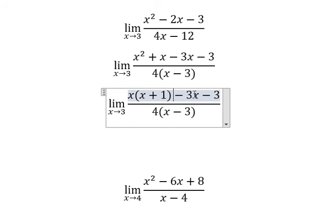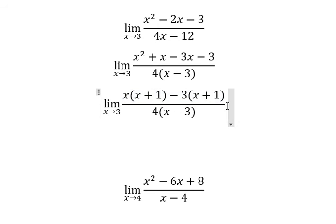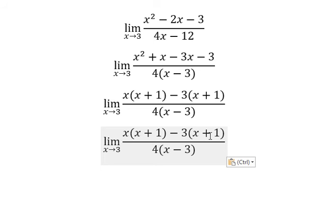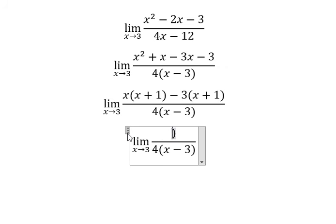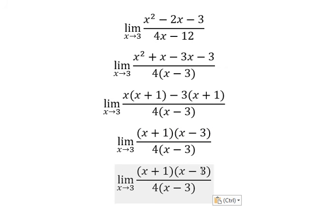Negative three and negative three — we can do another factorization. So x plus one and x plus one — we can do another factorization. So we simplify x minus three on the numerator and denominator.